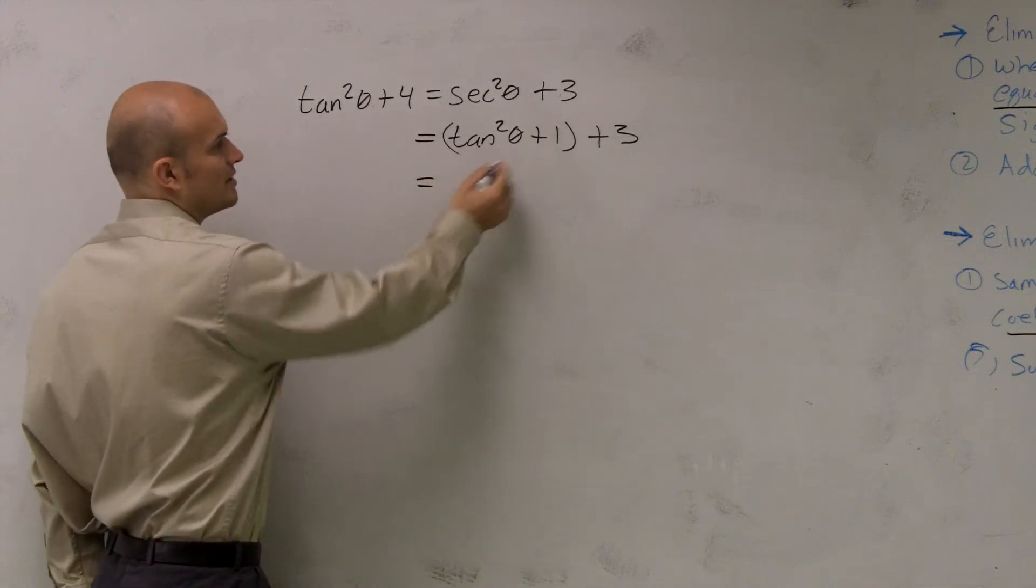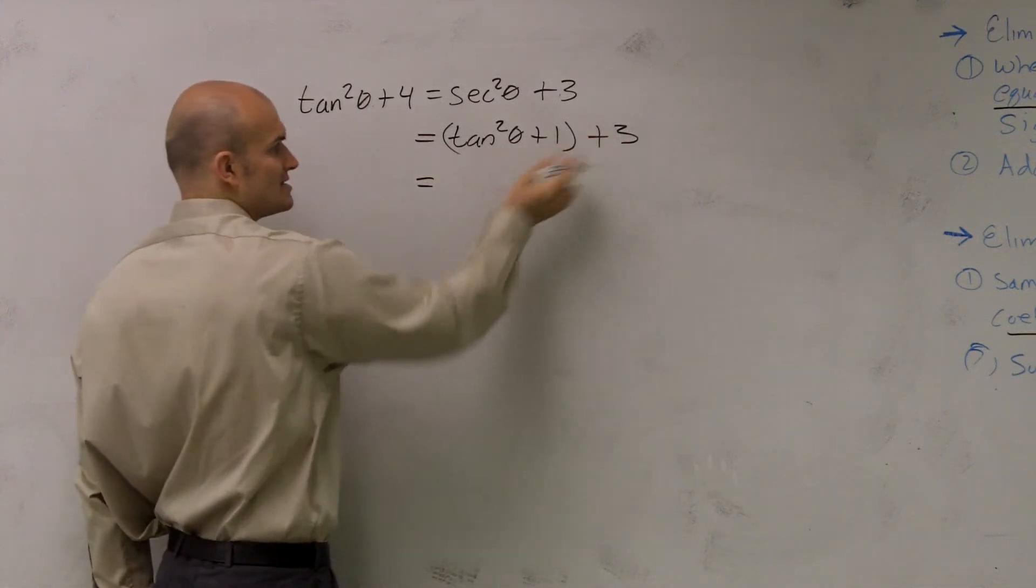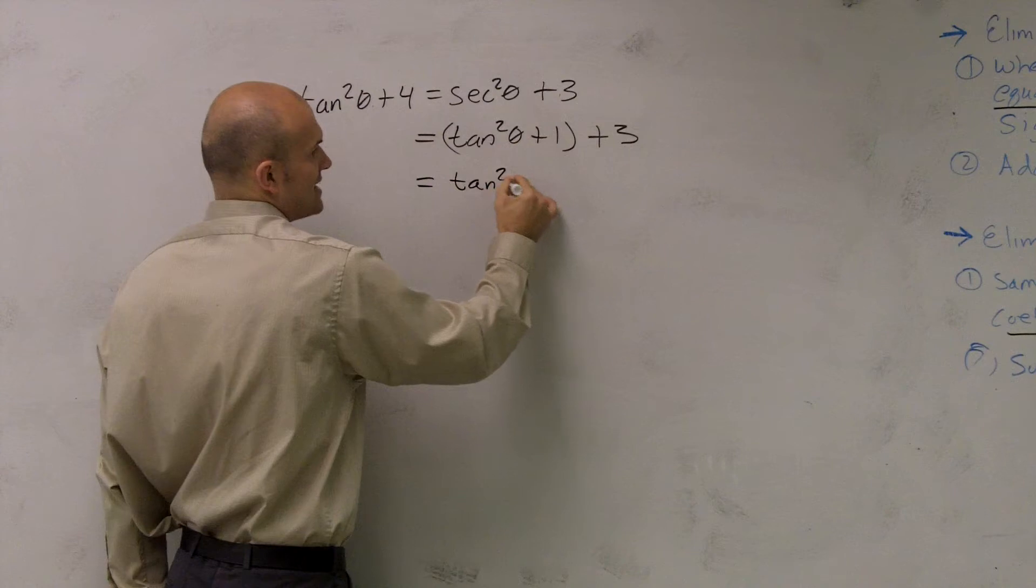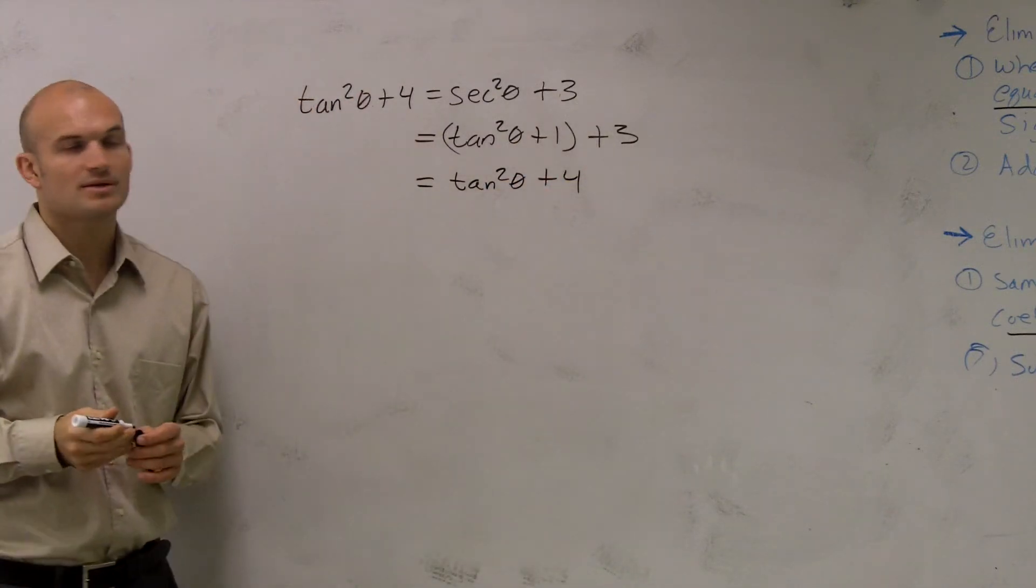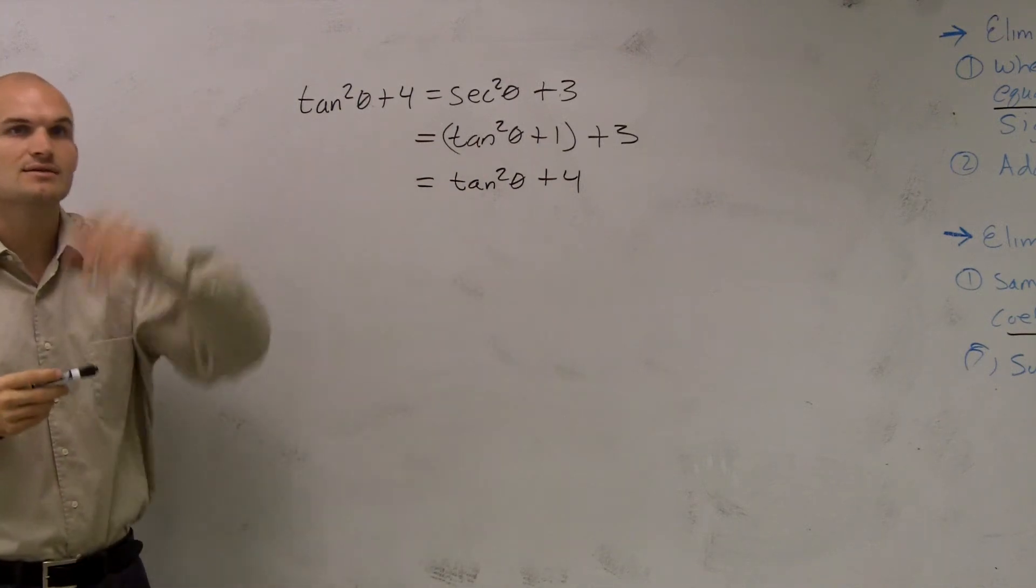Then, well, if I was going to combine my terms, I can simply just add this, and I get tangent squared of theta plus 4 equals tangent squared of theta plus 4. See now how the left side equals the right side?